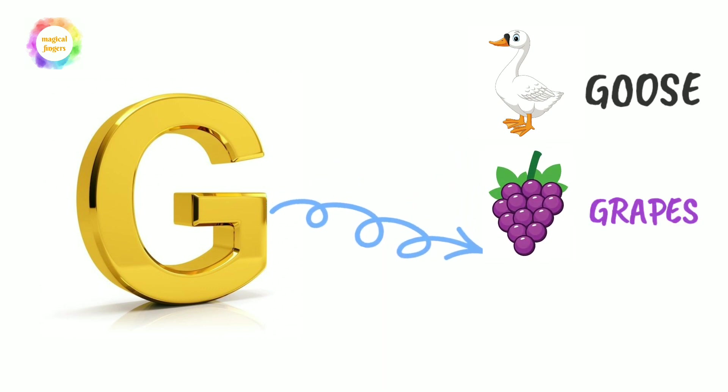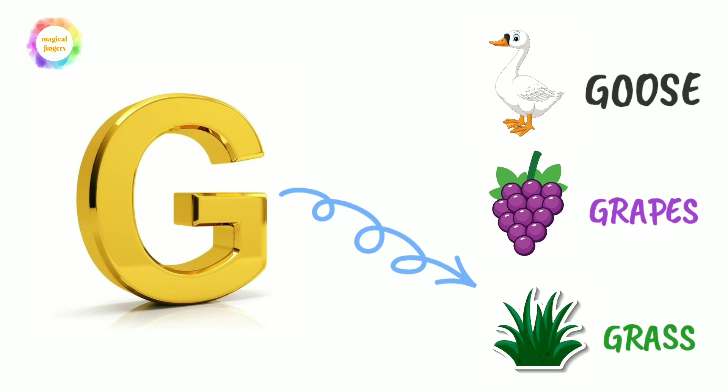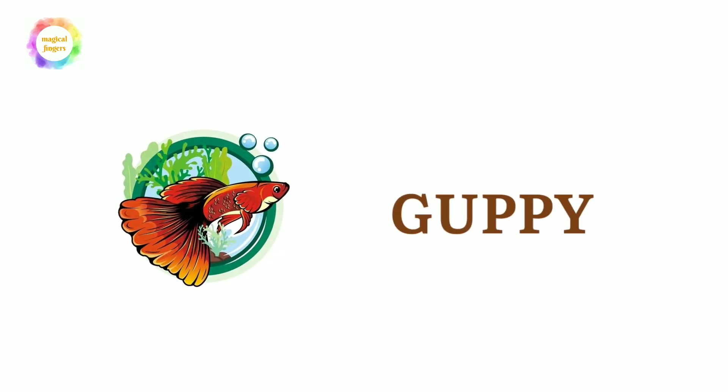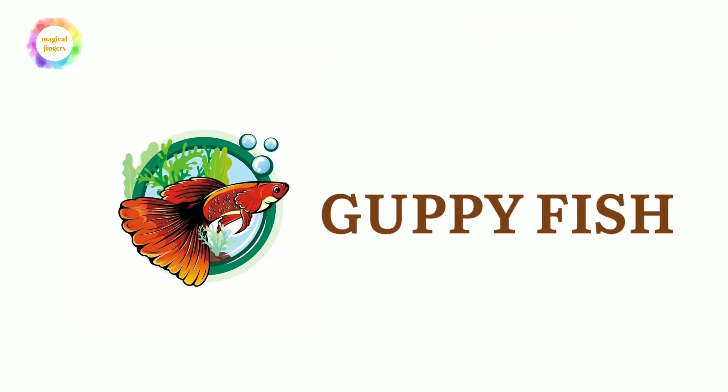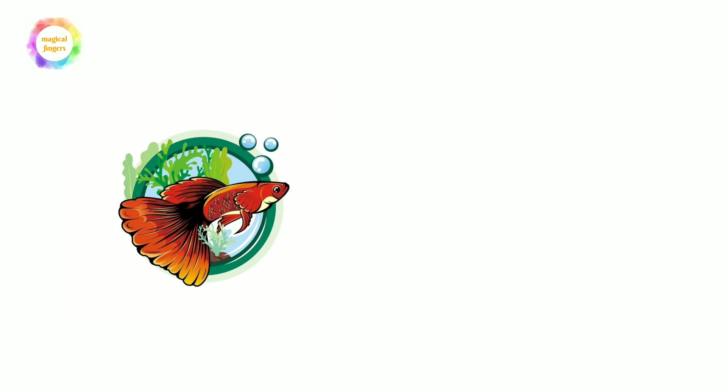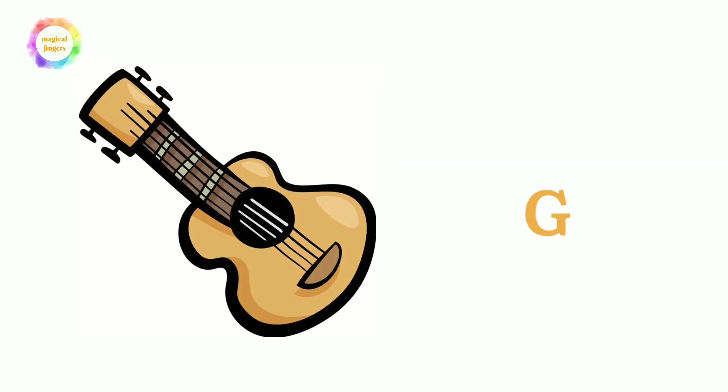And G is for grass, G-R-A-S-S. Next is guppyfish, G-U-P-P-Y-F-I-S-H.